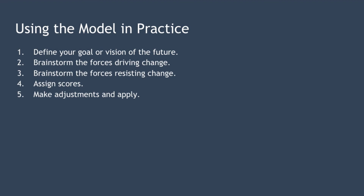For example, suppose your team was fearful of using new technology and you'd rated this a five. You could draw up a plan to train your team to use the latest technology, with the intention of helping them realize the new technology makes their roles more interesting and varied. Once you've done this, you estimate you could reduce this rating from a five to a two, and by doing that you will reduce the resistance to change.